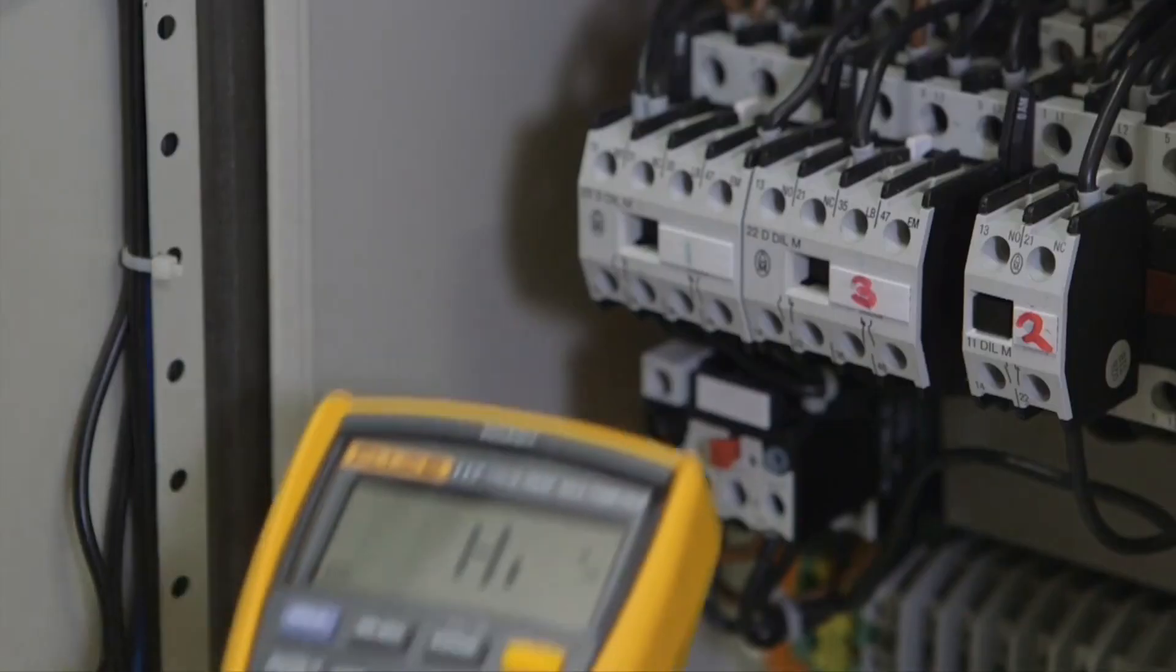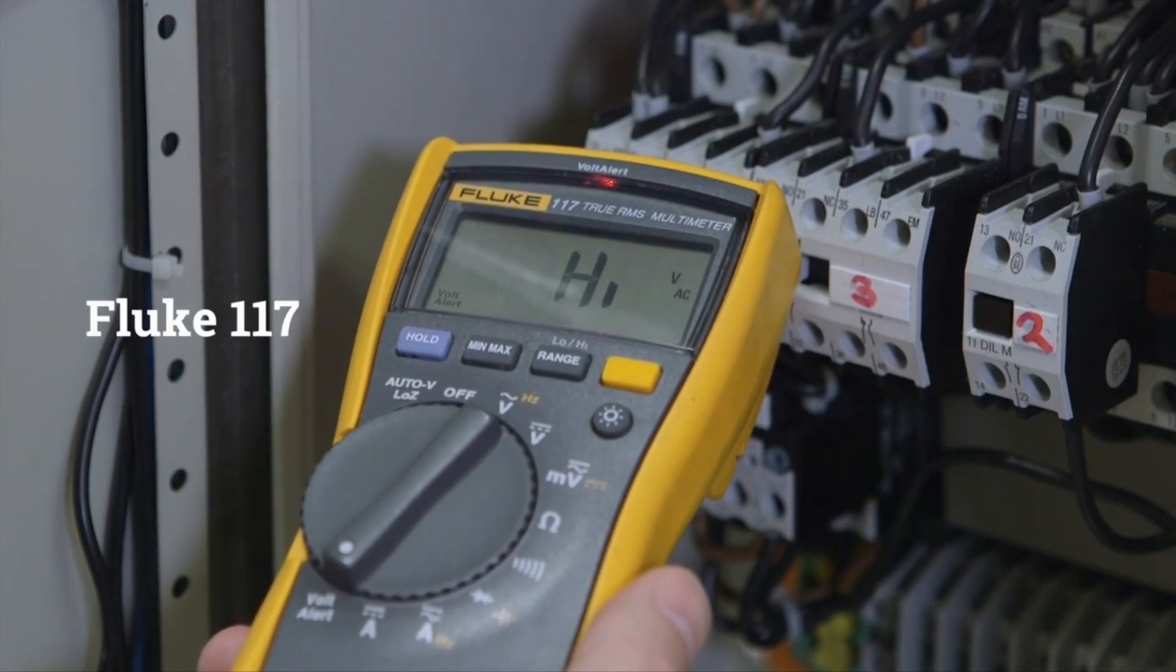The Fluke 117 has a non-contact voltage detector so you can get the job done faster.